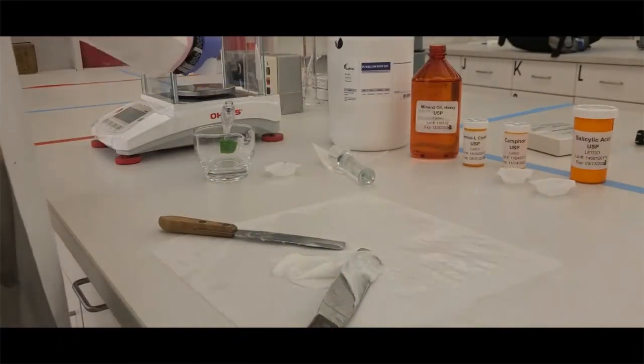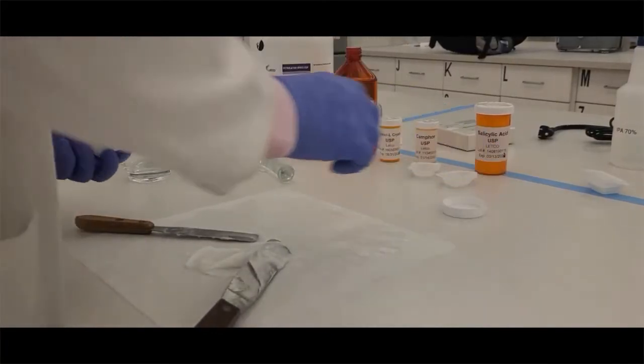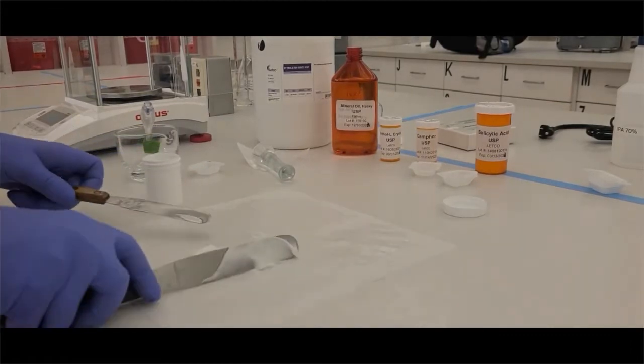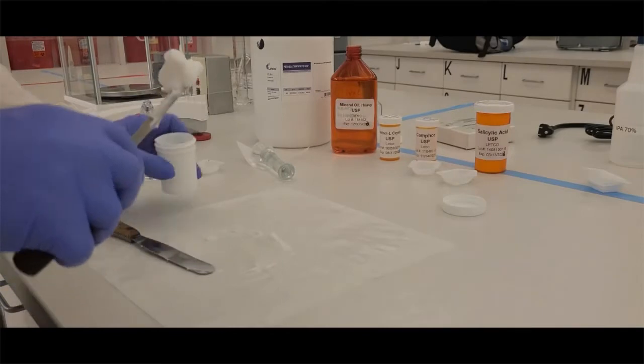And once you've got a nice uniform mixture, it should be a little bit of an off-white color, you're going to get your dispensing container. Now, mine's a larger dispensing container I'm using here. You may have a smaller one. You're going to weigh it empty. Once you've weighed it empty, your goal is to now place all that ointment into the container.